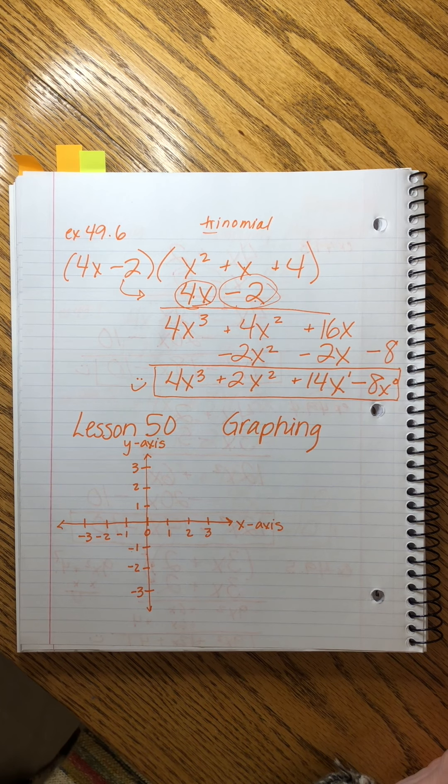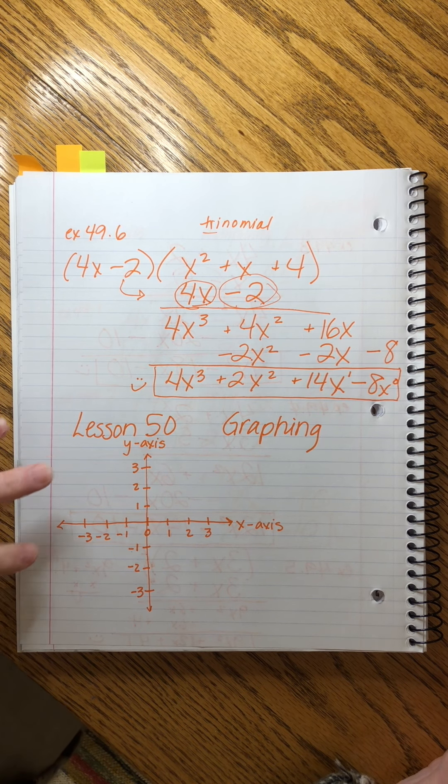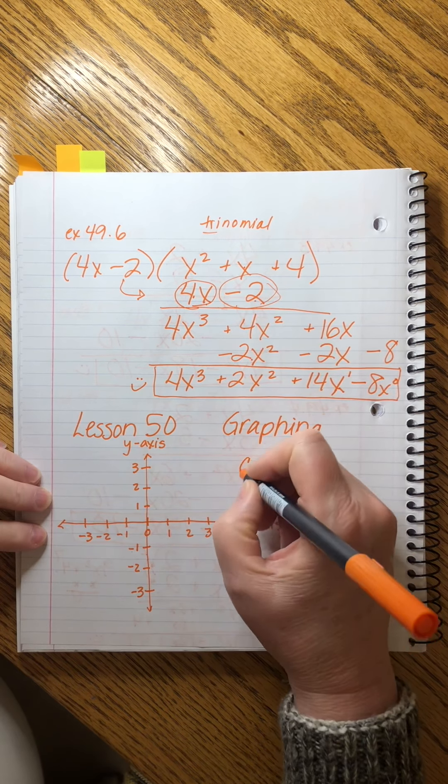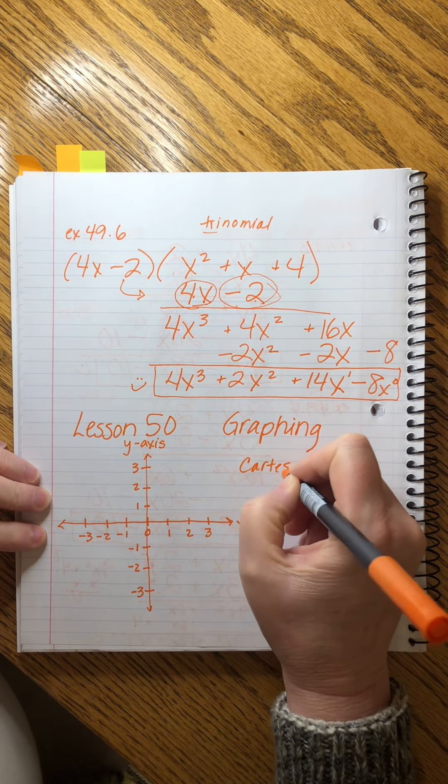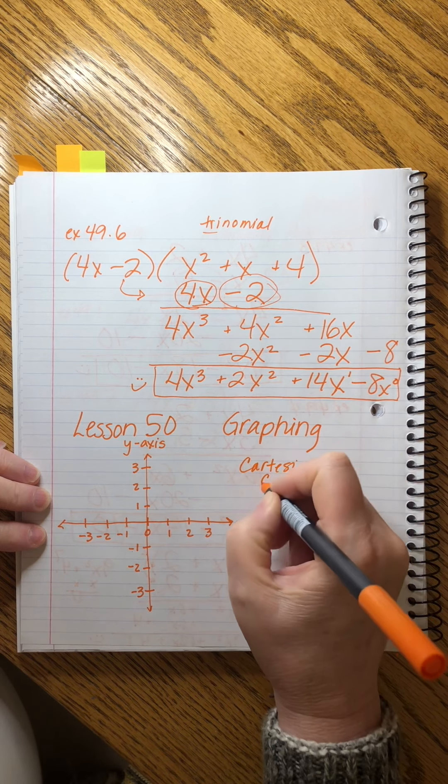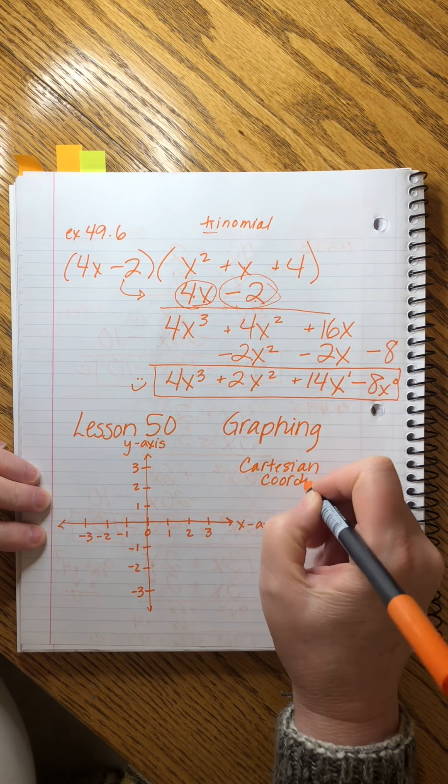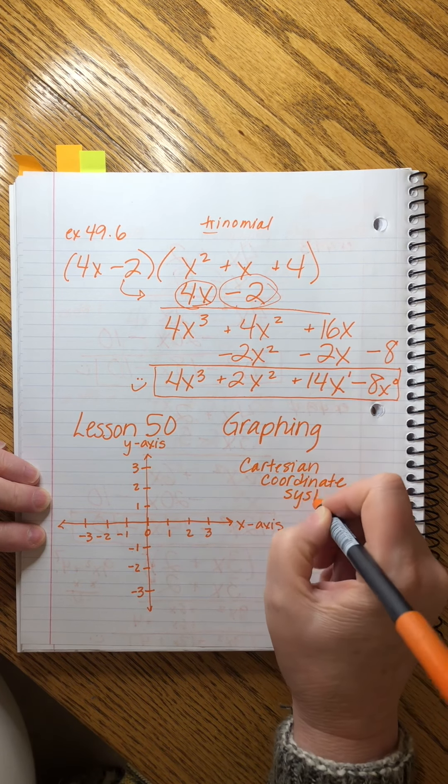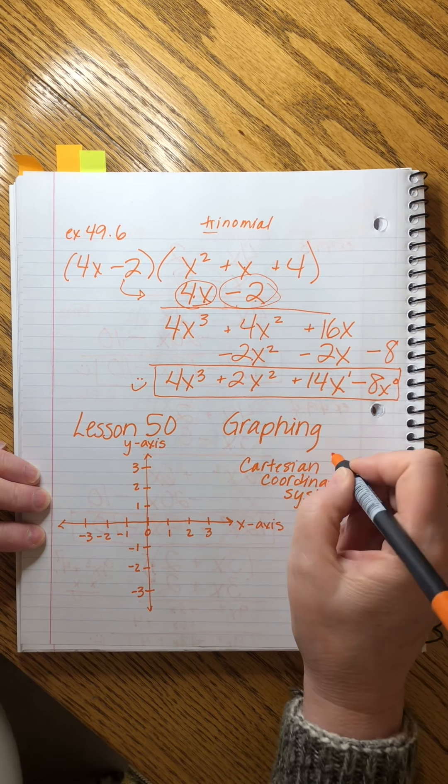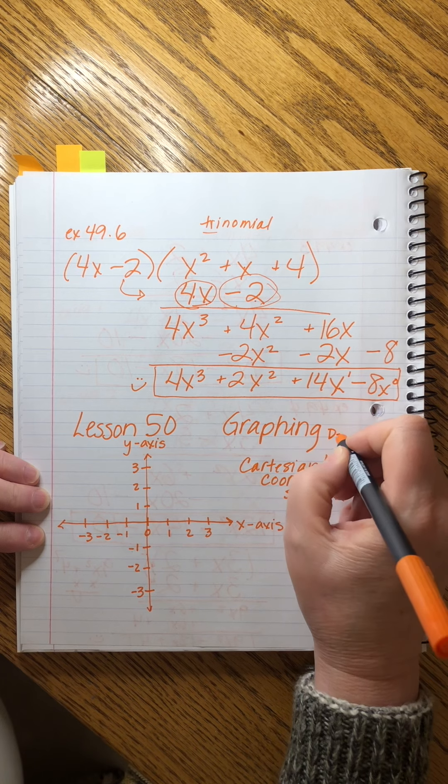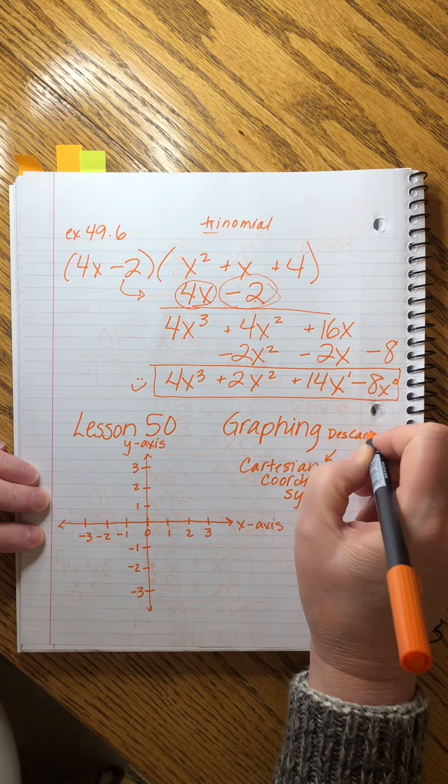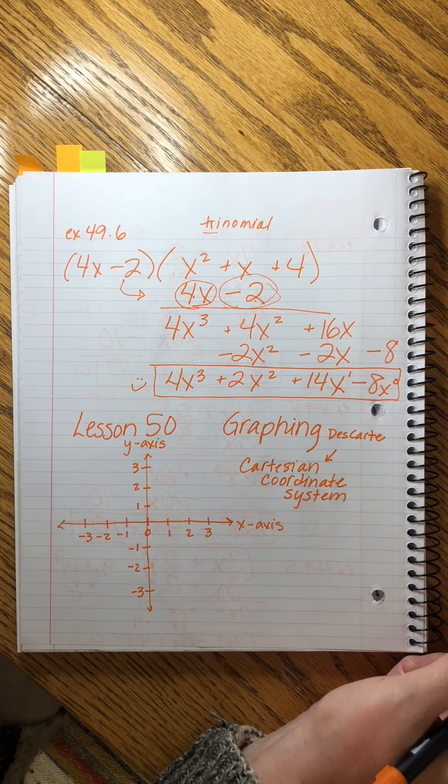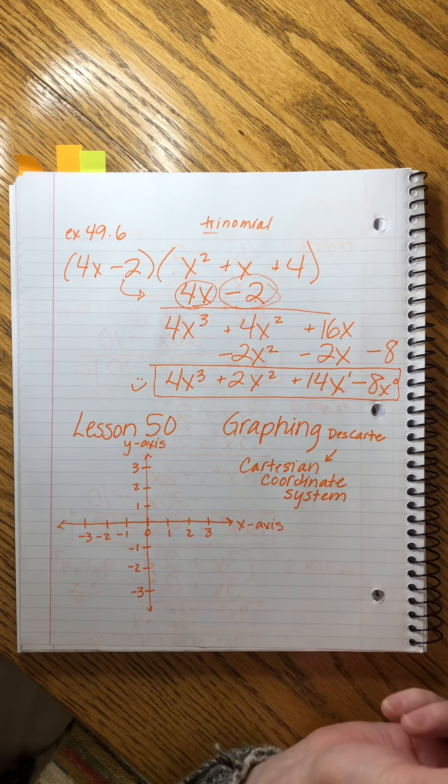Okay, so this is what we call a Cartesian coordinate system. And this is because it was invented by a guy named Descartes. So that's his name, right? It's just he's the same guy who developed the Cartesian well.